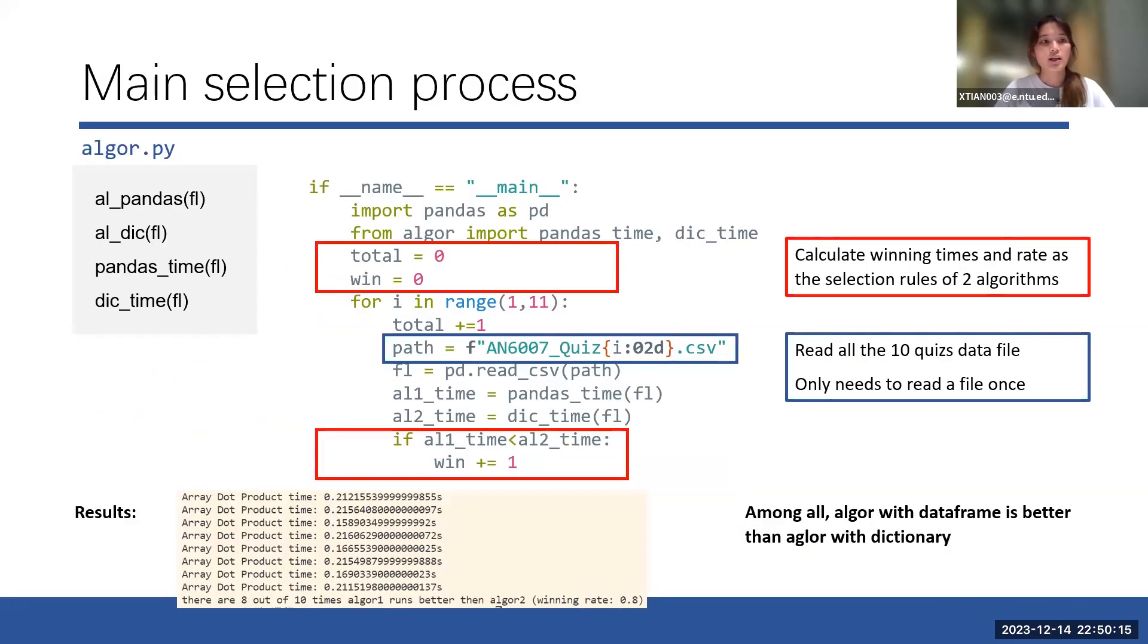And next, across from all the functions, I also have a selection process in the algorithm lesson file. I calculate the winning times and the winning rate of algorithm 1. By referring to winning, I mean that algorithm 1's time is shorter than algorithm 2's.